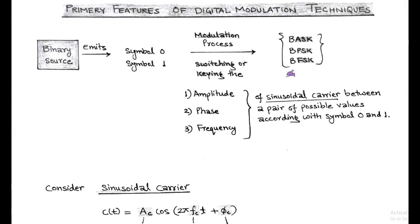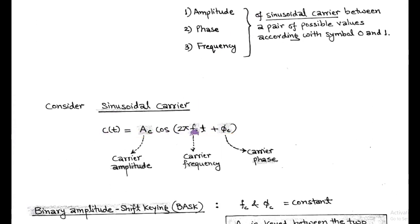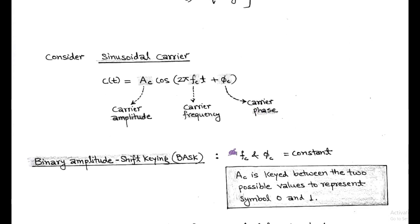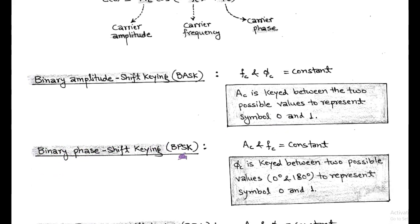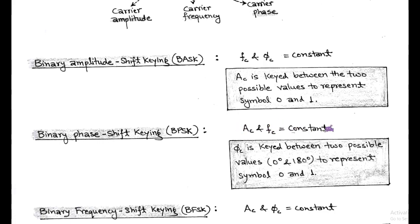In digital modulation techniques, we focus on a high-frequency sinusoidal carrier signal expressed as c(t) = AC cos(2πfct + φc), where AC is carrier amplitude, fc is carrier frequency, and φc is carrier phase. In binary ASK, carrier frequency and phase remain constant; only the carrier amplitude AC is keyed between two possible values to represent symbol 0 and symbol 1. In binary PSK, carrier amplitude and frequency remain constant, but carrier phase φc is switched between two possible values such as 0° and 180° to represent symbol 0 or symbol 1.